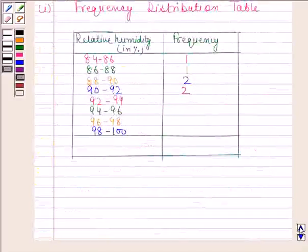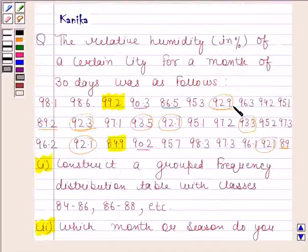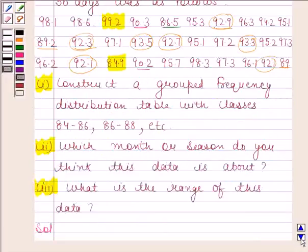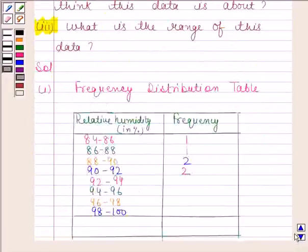Now next interval is 92 to 94. Now 92.9, 92.3, 93.5, 92.7, 92.3, 93.5, and 92.7 are covered in this interval. So frequency of 92 to 94 is 7.